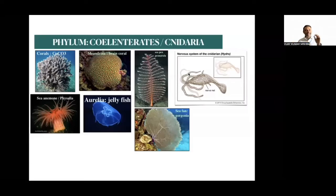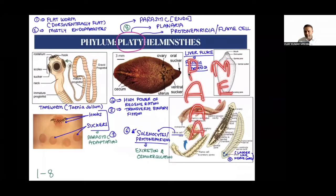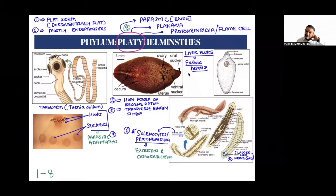Hello everybody, welcome again to the second very important lecture of animal kingdom. In the last lecture we spoke about up to Ctenophora. Today we will move beyond Ctenophora to the next phylum called Platyhelminthes. Our goal is to discuss Platyhelminthes, Aschelminthes, Annelida, Arthropoda, Mollusca, Echinodermata, Hemichordata, and Chordata — these eight remaining phyla.